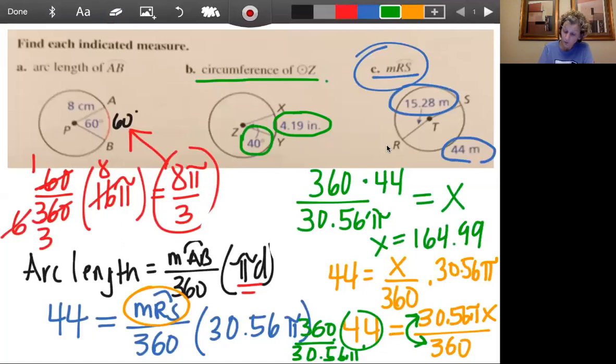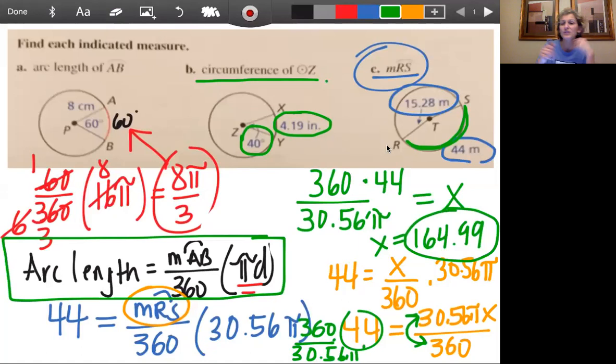And so remember what we were looking for is the arc measure. Does it make sense that the arc measure would be 164.99? Do you see this right here? It looks like it's just less than a semicircle, just less than 180. So it does make sense. Now that seems kind of messy, guys. Sorry. But basically it's this formula right here. And it just depends on what parts they give you. And then you solve for the other parts using your algebra. Okay? All right. Great job.